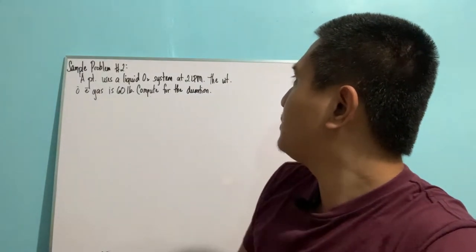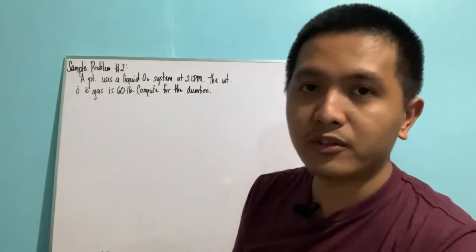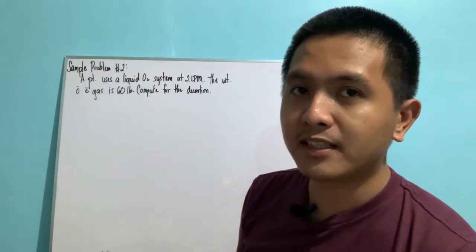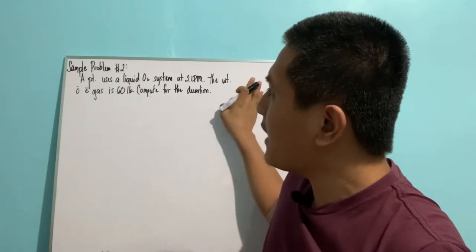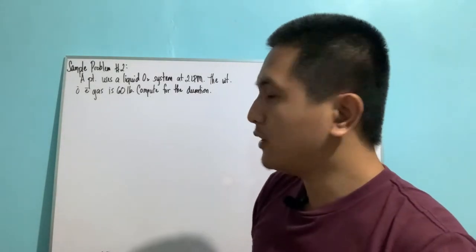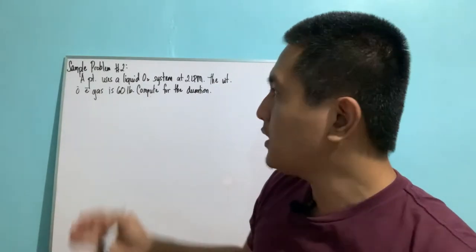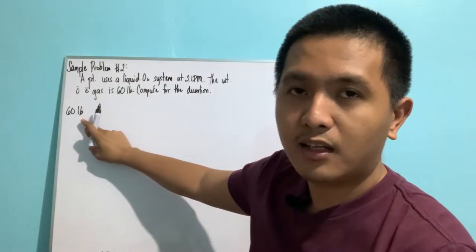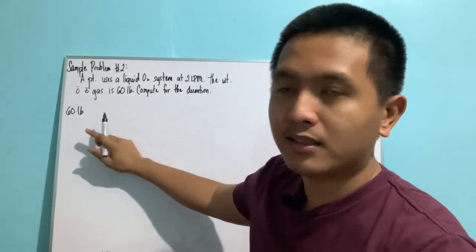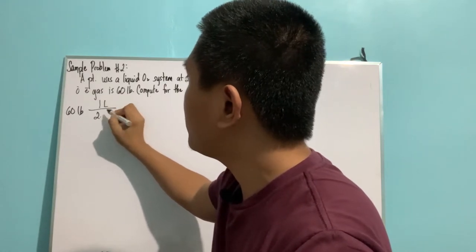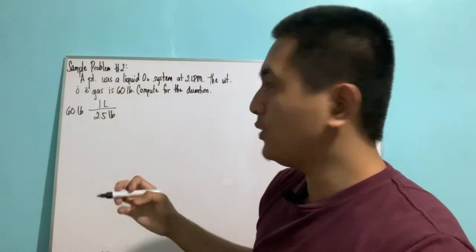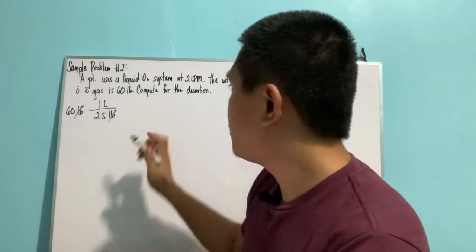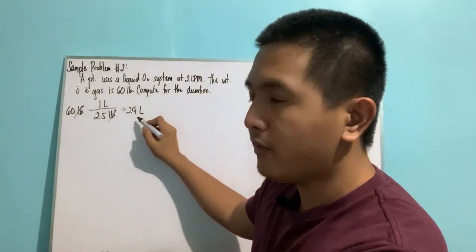Let's have a second example. A patient uses a liquid oxygen system at 2 liters per minute. The weight of the gas is 60 pounds. Compute for its duration. What we need is the amount of gas in liters, but the problem gives weight in pounds. The first step is to convert the weight into the amount of gas. One liter of liquid oxygen equals 2.5 pounds, so we divide 60 by 2.5.